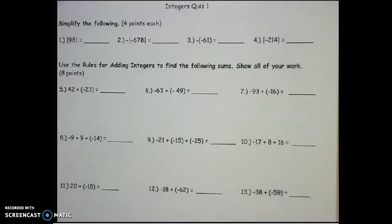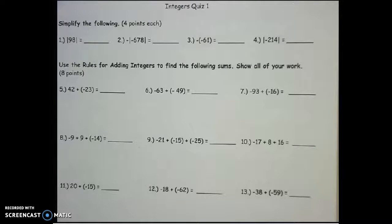For numbers 1 through 4, we're doing the absolute value. Remember, absolute value is always positive as far as what is on the inside of the absolute value bars, but the absolute value bars only control what's on the inside. They don't control what's on the outside.